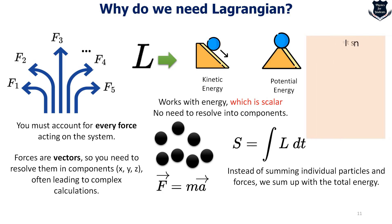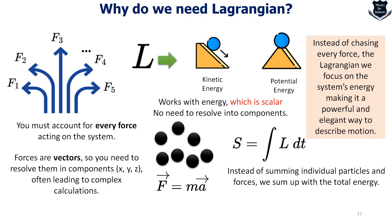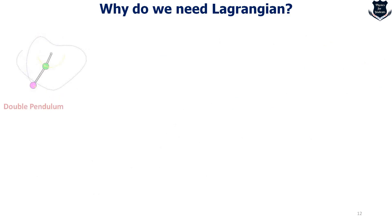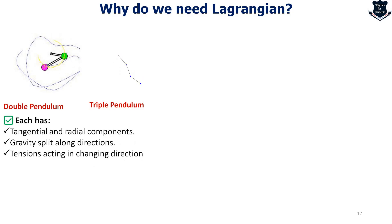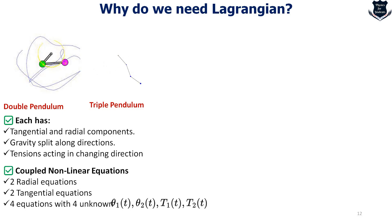For example, instead of chasing every force, the Lagrangian is just focusing on two factors: the energy, kinetic and potential, and it describes a powerful and elegant way to describe the laws of motion. If I show you a double pendulum which is tracing this path, you go up and down, then we take a triple pendulum which is further more complex. You can see each of these items have got a tangential and radial components, gravity splits, tension acting and changing in directions. Then we have two radial equations, two tangential equations, then we get equations with four unknowns - well it is a big problem.